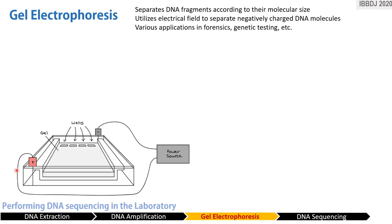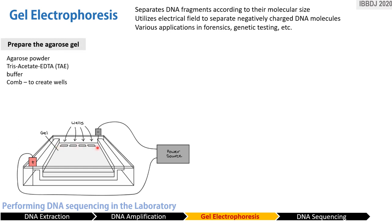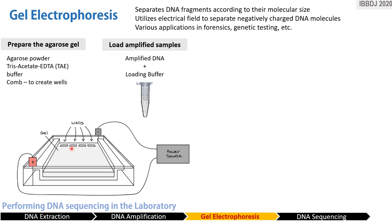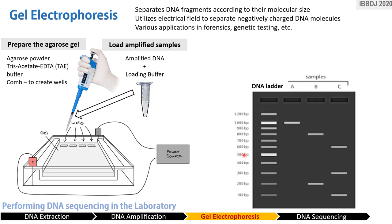The next step after DNA amplification is gel electrophoresis. Gel electrophoresis separates DNA fragments according to their molecular size or repeats. The agarose gel is a porous polysaccharide matrix prepared per the manufacturer's instructions, which allows genetic material to move. It looks like a colorless gelatin with wells on one side. The solidified gel is submerged in TAE buffer which allows electrical flow. Amplified DNA is mixed with loading buffer and dye, and a DNA ladder — a combination of DNA fragments of known lengths — is added as a reference.